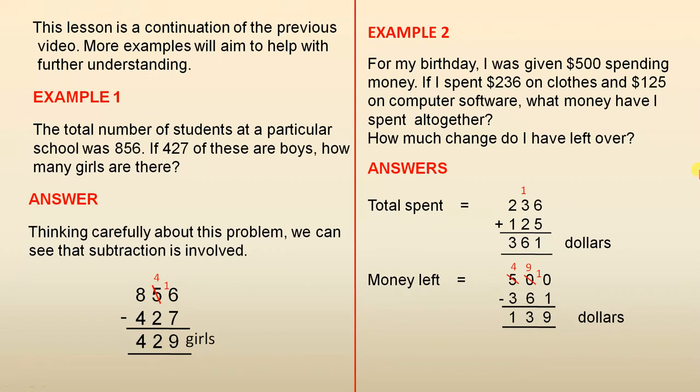Example 2: For my birthday, I was given $500 spending money. If I spent $236 on clothes and $125 on computer software, what money have I spent altogether? And how much change do I have left over?